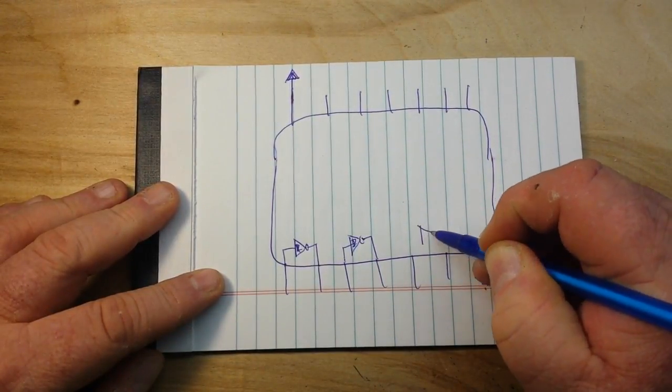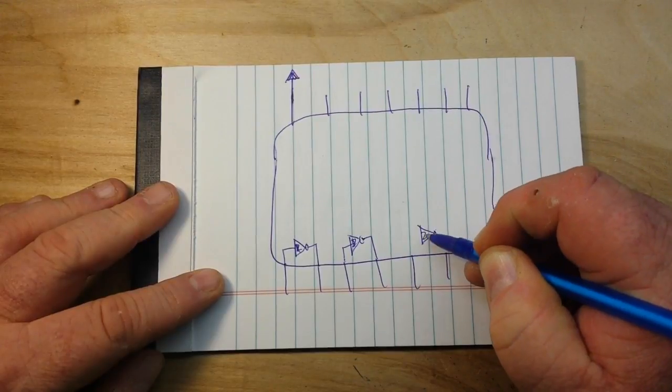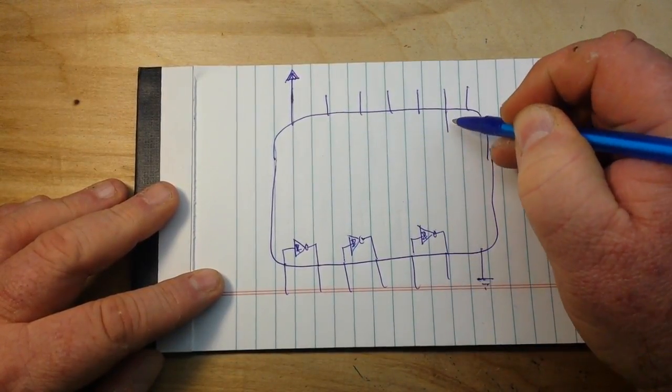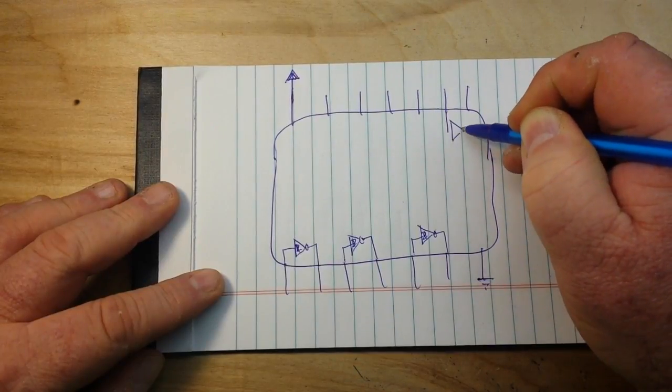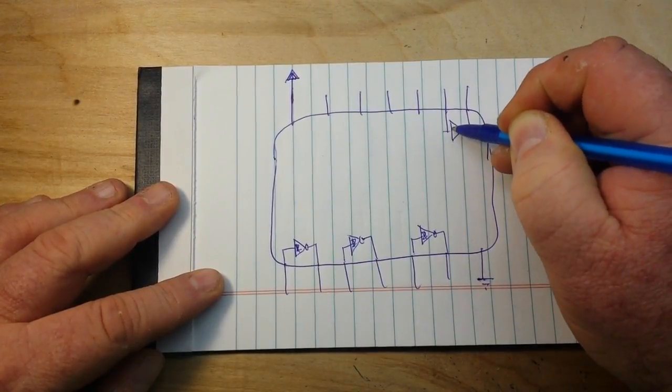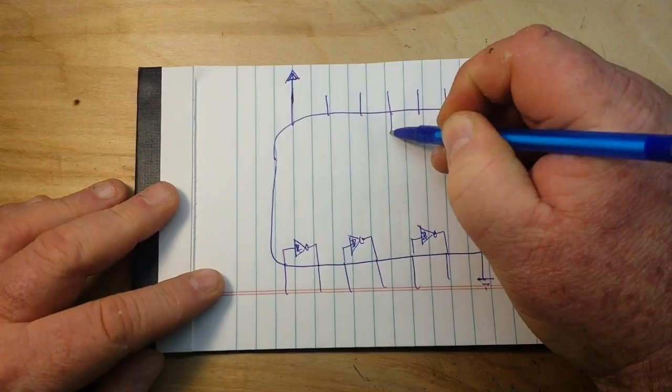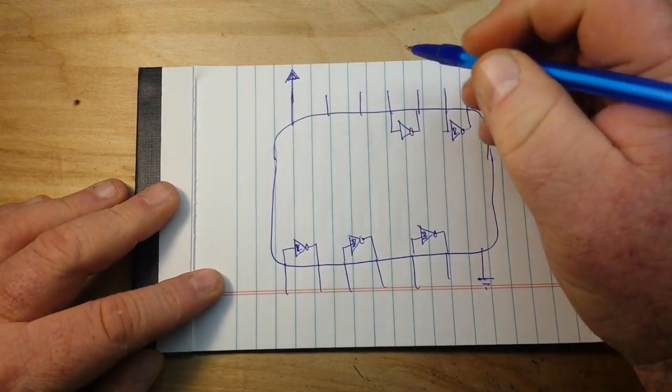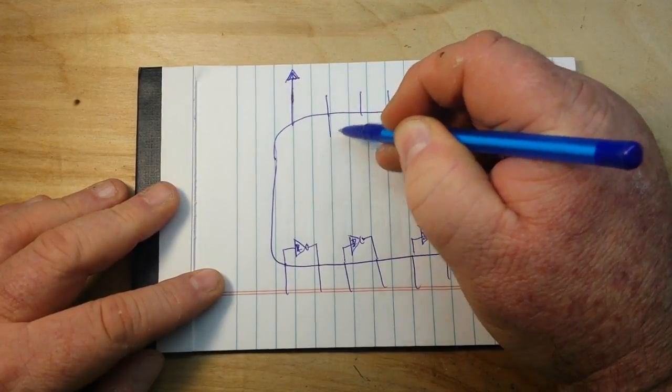So what we have in the middle here are our hex inverters, six inverters. Hex means six, I know that and now so do you. I'm just going to draw these quickly here so as not to waste our time.